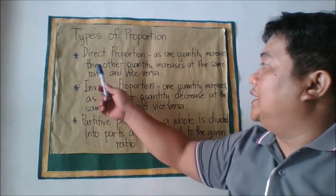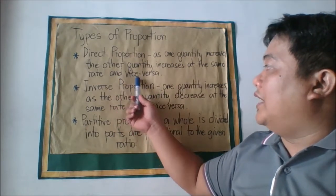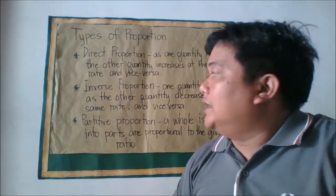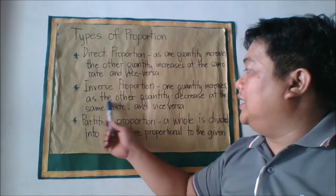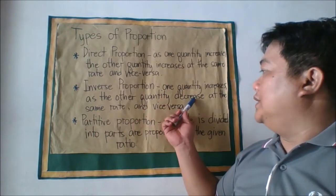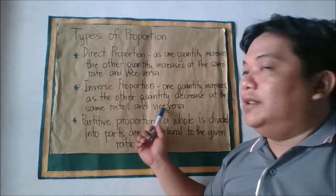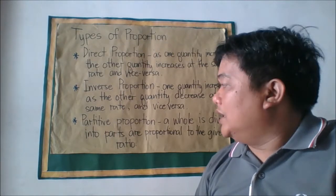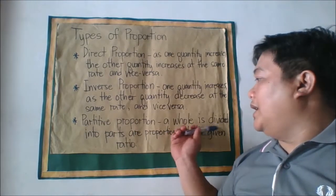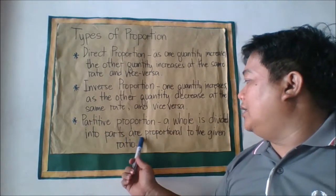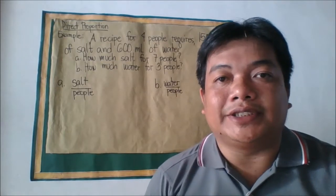Next is inverse proportion: if one quantity increases, the other quantity decreases at the same rate, and vice versa — there is an opposite reaction. Then we have partitive proportion, where a whole is divided into parts proportional to a given ratio.